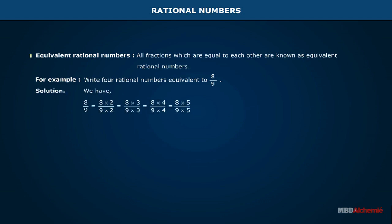We have 8 by 9 equals 8 into 2 upon 9 into 2 equals 8 into 3 upon 9 into 3 equals 8 into 4 upon 9 into 4 equals 8 into 5 upon 9 into 5. 8 by 9 equals 16 by 18 equals 24 by 27 equals 32 by 36 equals 40 by 45.